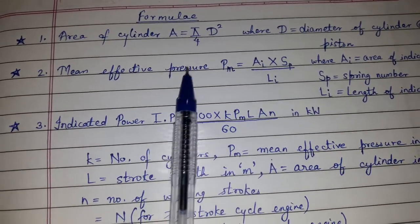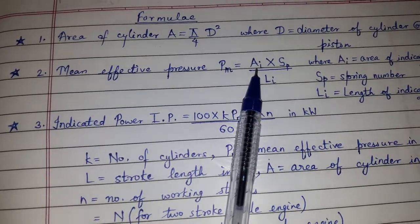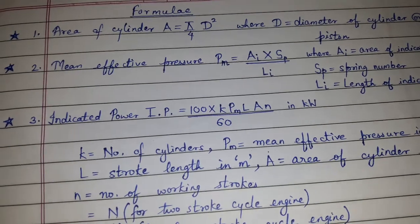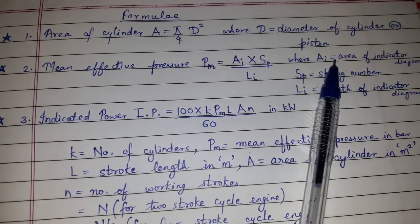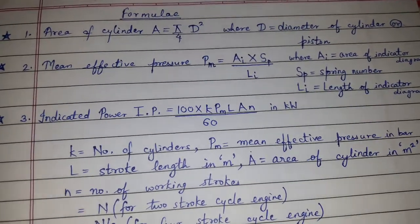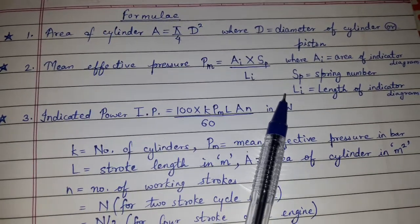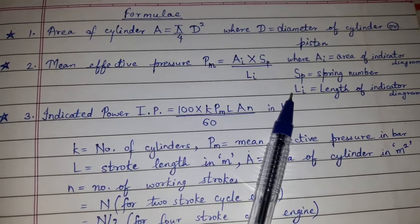Mean effective pressure, i.e. Pm, is equal to Ai × Sp upon Li where Ai is equal to area of indicator diagram, Sp is spring number, Li is the length of the indicator diagram.